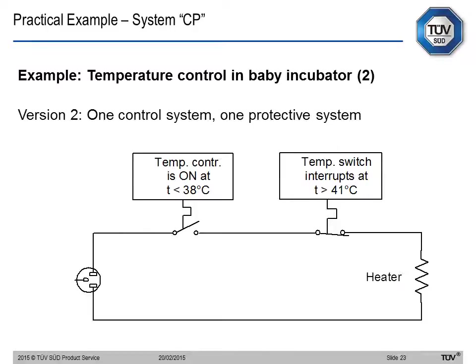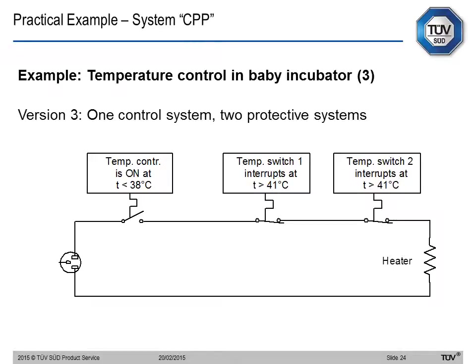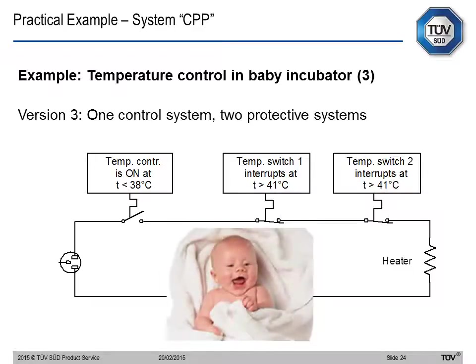Going further, we have system CPP: one control system and two protective systems. It works the same way — if the first one fails, there are two more; if the first two fail, there is the third. However, if one of the two switch interrupts doesn't work, we don't know about it because the control system is working fine. This is what we call a sleeping fault — there is a fault but we don't know about it until the control system also fails. The likelihood of all three switches failing simultaneously is drastically reduced, and we have a happy baby.